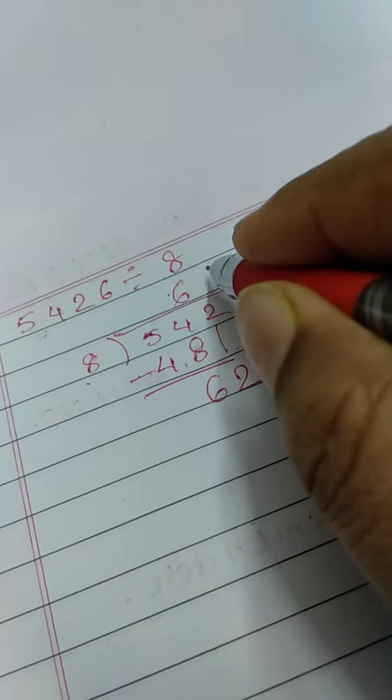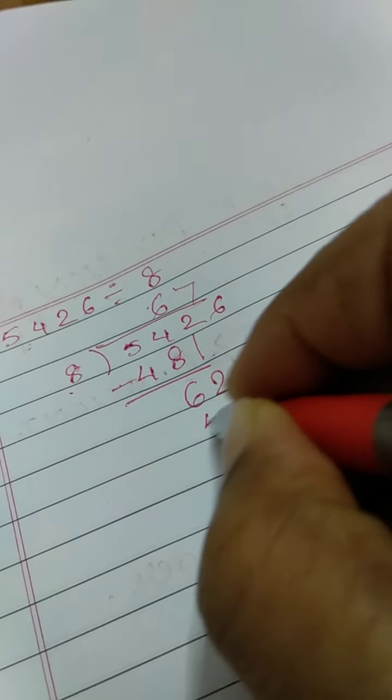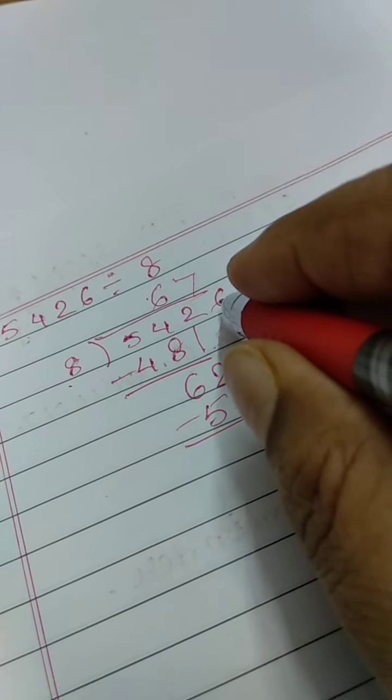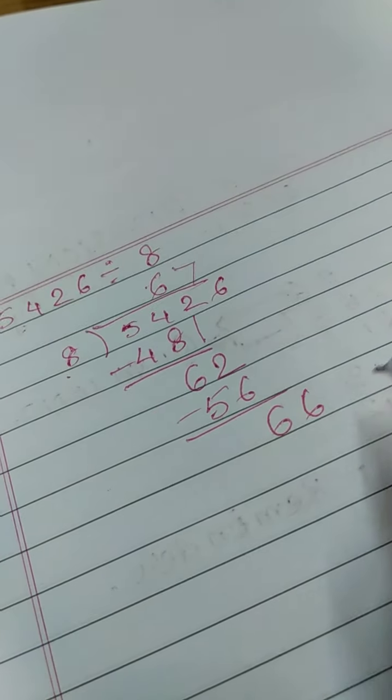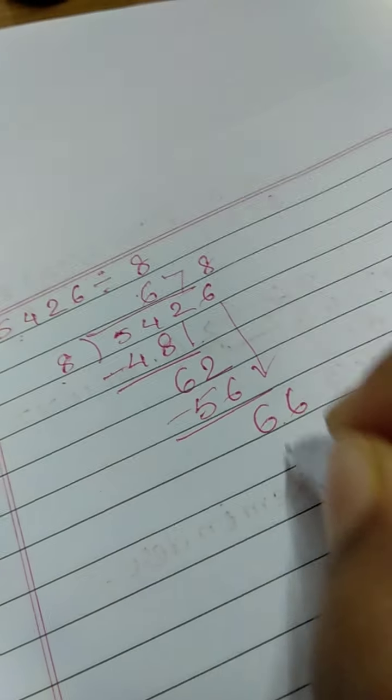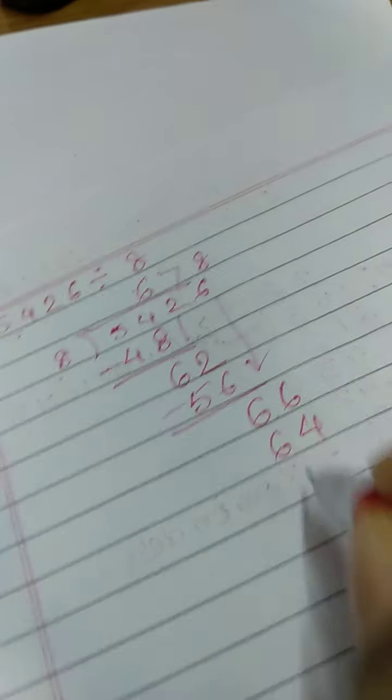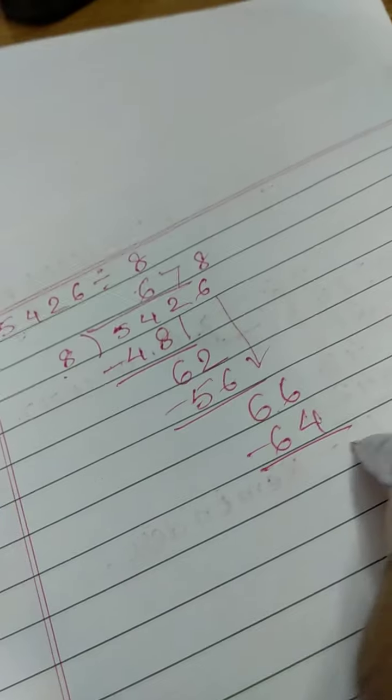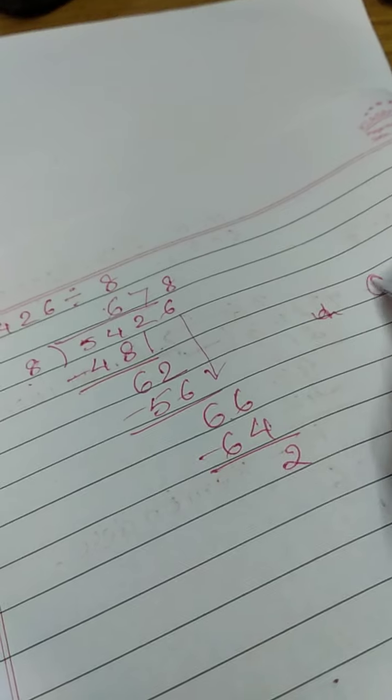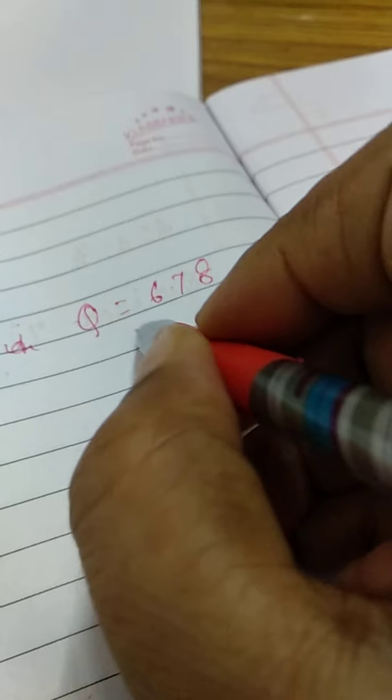So 8 times 7 is 56. I will do my subtraction and I will get 6, because 12 minus 6. Again I will write 6. Bring down this 6. Again 8 times 8 is 64. Again the subtraction I will do and I will get 2. So here the answer will be quotient 678 and the remainder will be 2.